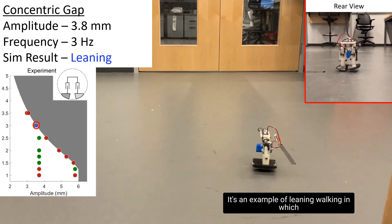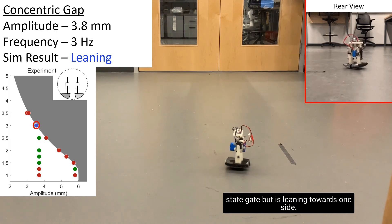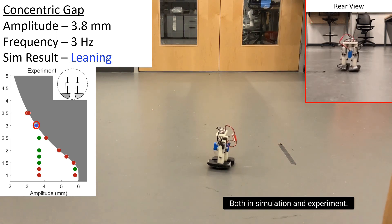This is an example of leaning walking in which the walker is able to establish a steady state gait, but is leaning towards one side, both in simulation and experiment.